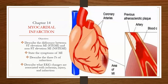Here we see the heart of someone who has had an MI. Here you see the area of the MI, the coronary arteries that were affected, and over here we see the plaque that caused the occlusion. Our objective for today is to describe the difference between ST elevation MI or STEMI and non-ST elevation MI or non-STEMI, and to state the symptoms of MI and describe the three I's of infarction.